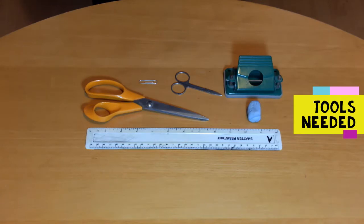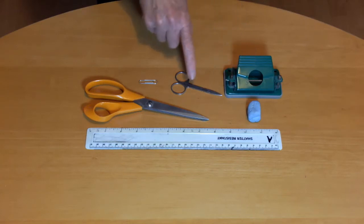And you'll need these tools: a ruler, blue tack, large scissors, a hole punch or pointed nail scissors and a wire paper clip.